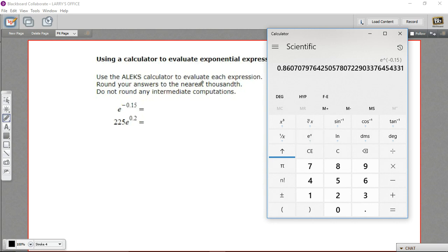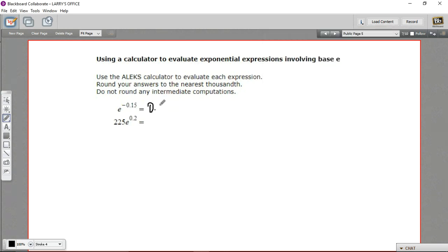And let's see, they want these rounded, there's 1,000, so this is 0.861. All right, so this is 0.861.